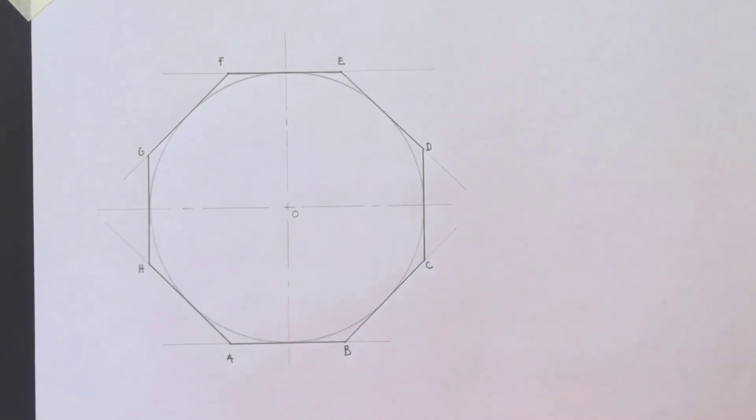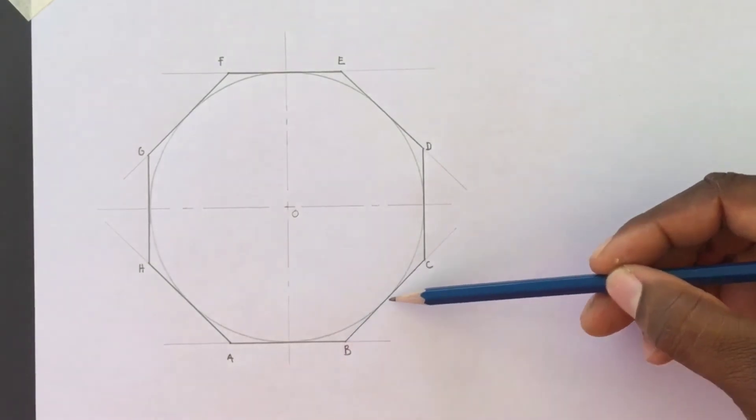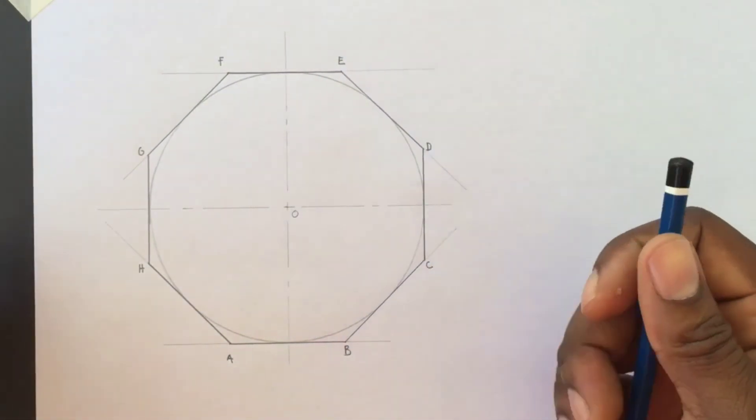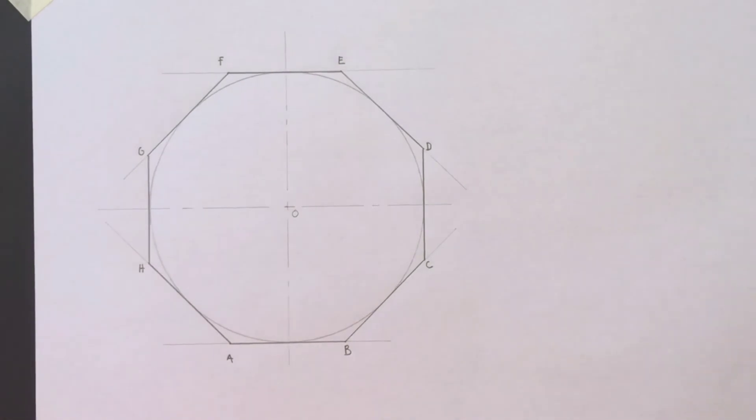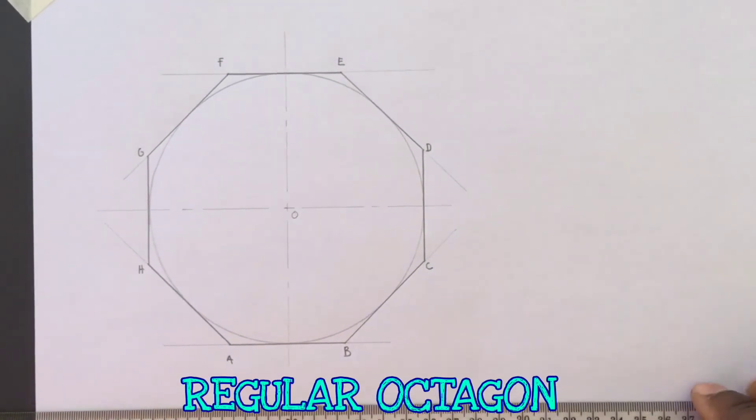This octagon today was constructed as a result of us being given the distance across the flats. I will now border my paper, complete my title block, and label my drawing.